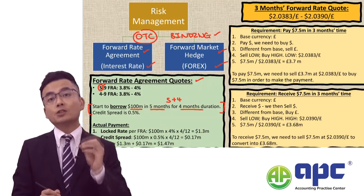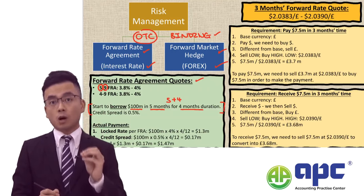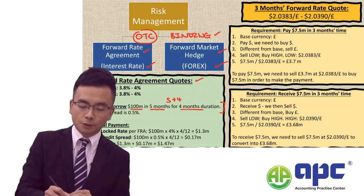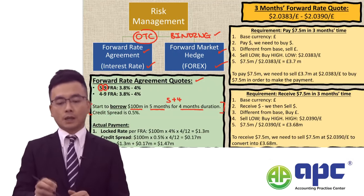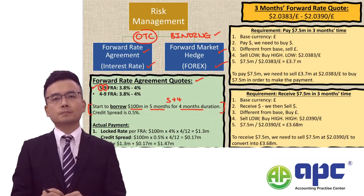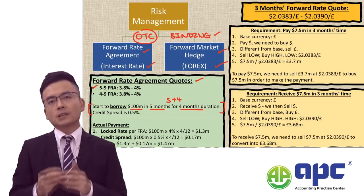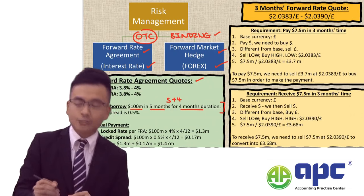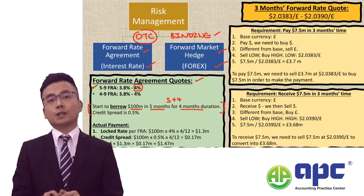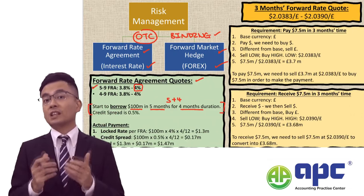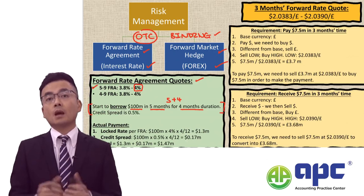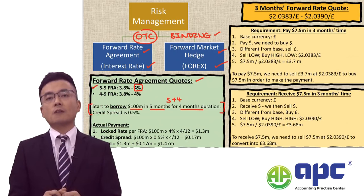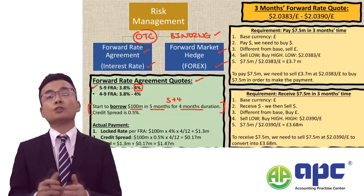This means we need to select the quote from the FRA for 5 to 9. Because we need to borrow, and we always borrow at a higher interest rate, we select 4%. And of course, if I were to deposit, I would need to choose 3.8%.